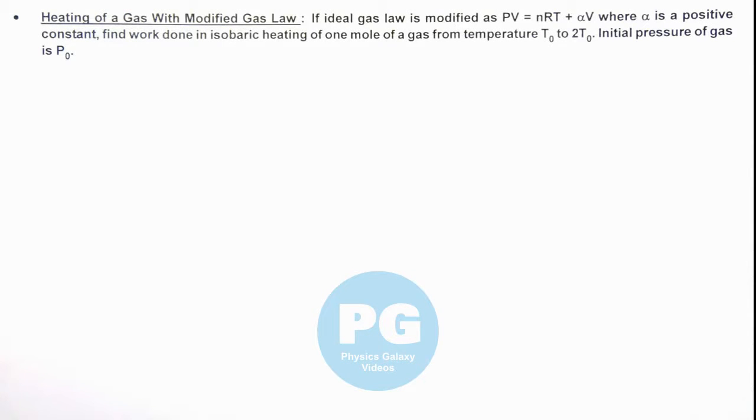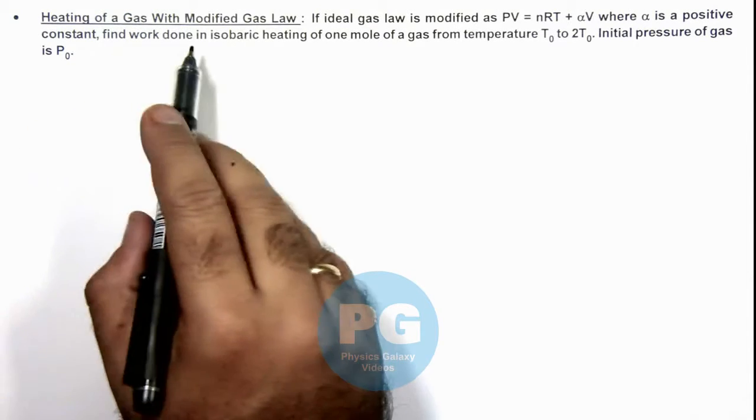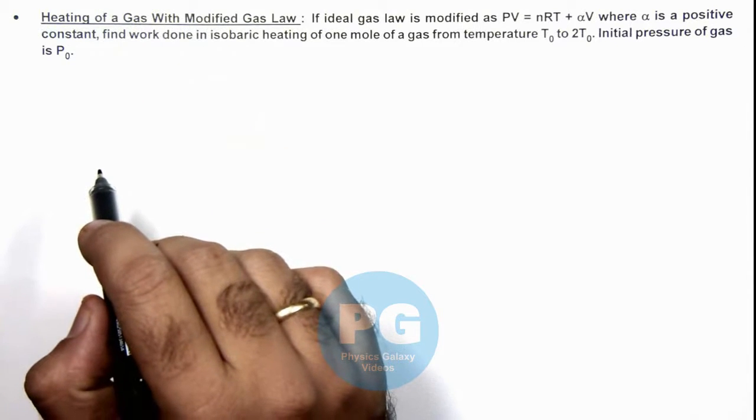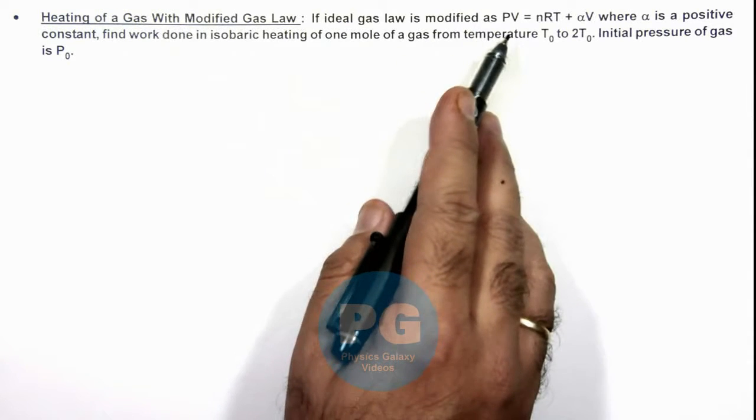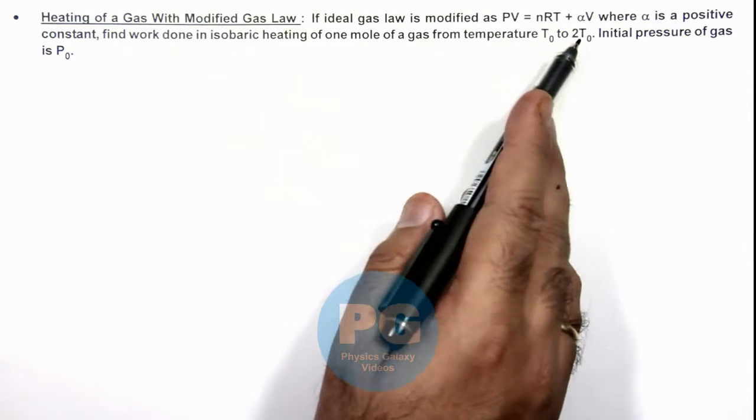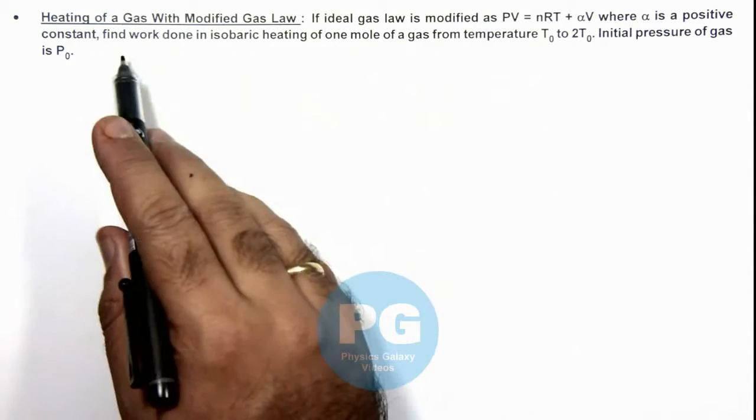In this illustration we'll discuss heating of a gas with modified gas law. Here we are given that if ideal gas law is modified as PV = nRT + αV, where α is a positive constant.